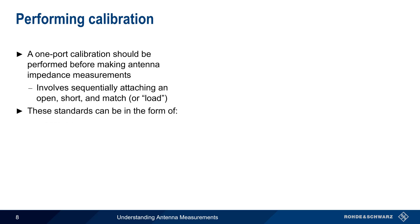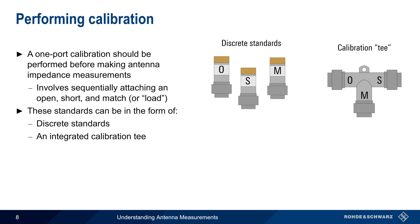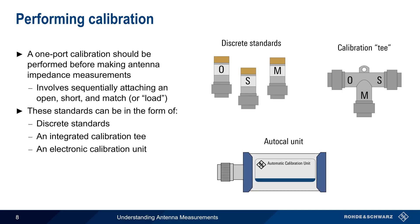These standards can be in the form of discrete standards, or they may be combined into a calibration tee. In addition to these manually attached standards, electronic calibration units can also be used. These units switch their internal standards in and out automatically, and are controlled by the attached VNA.